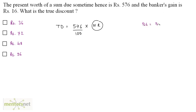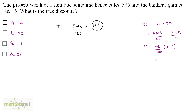Banker's gain is basically the banker's discount minus the true discount. Banker's gain is given as 16, so 16 equals A·N·R upon 100 minus P·N·R upon 100. This simplifies to 16 equals N·R upon 100 times (A minus P), and A minus P is basically the true discount. So 16 times 100 divided by true discount equals N·R.